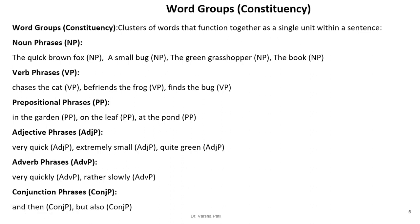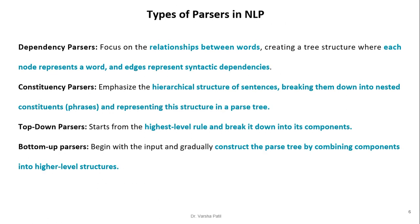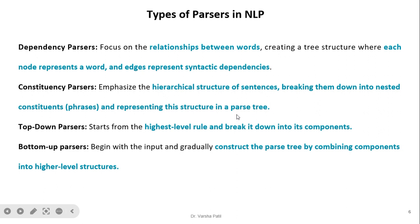Types of parsers in NLP: The dependency parser focuses on relationships between words, creating a tree structure where each node represents a word and each edge represents the syntactic dependencies. The constituency parser emphasizes the hierarchical structure of a sentence, breaking it down into nested constituents represented in a parse tree. The top-down parser starts from the highest-level rule and breaks down into its components. The bottom-up parser works in the opposite way — it begins with the input words and gradually constructs the parse tree by combining components into higher-level structures.